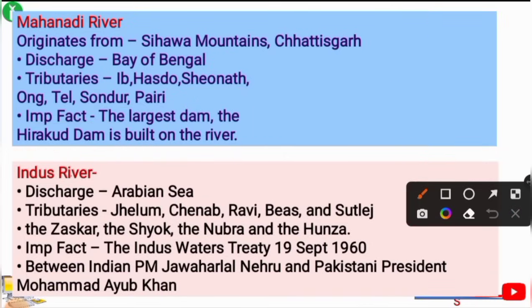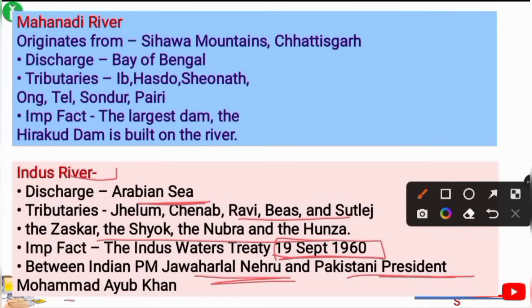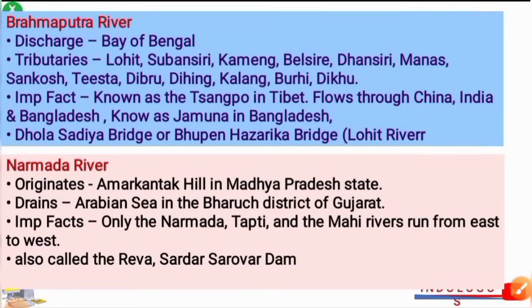The Indus River discharges into the Arabian Sea. Its tributaries include Jhelum, Chenab, Ravi, Beas, Sutlej, Shyok, Nubra, and Hunza. The Indus Water Treaty was signed on 19th September 1960, between Indian Prime Minister Jawaharlal Nehru and Pakistani President Mohammad Ayub Khan.